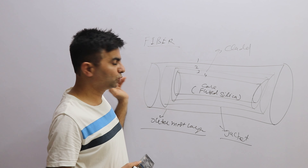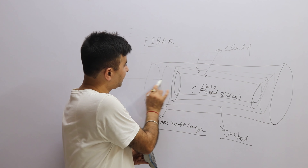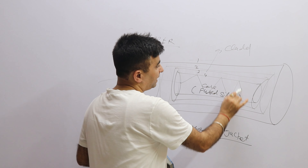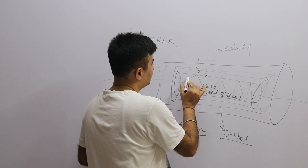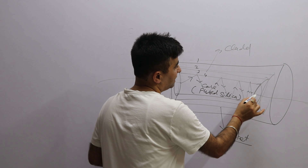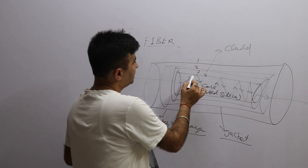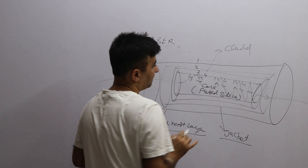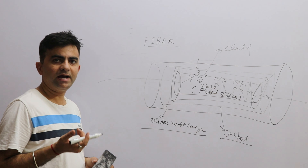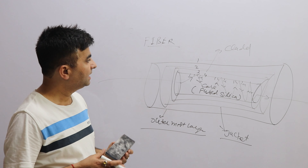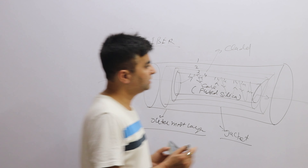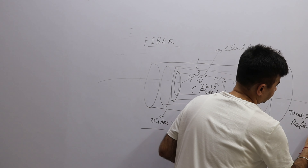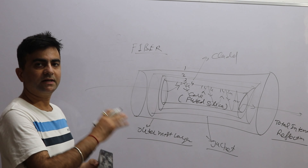Inside the fiber, light is sent from a source directly into the core. The light starts reflecting and bouncing back from the corners as it travels along — this is the concept of total internal reflection. The light strikes at the angle of incidence and reflects at the angle of reflection. The core has a higher refractive index and the cladding has a lower refractive index, and this is what enables total internal reflection to transmit the light inside the fiber core.